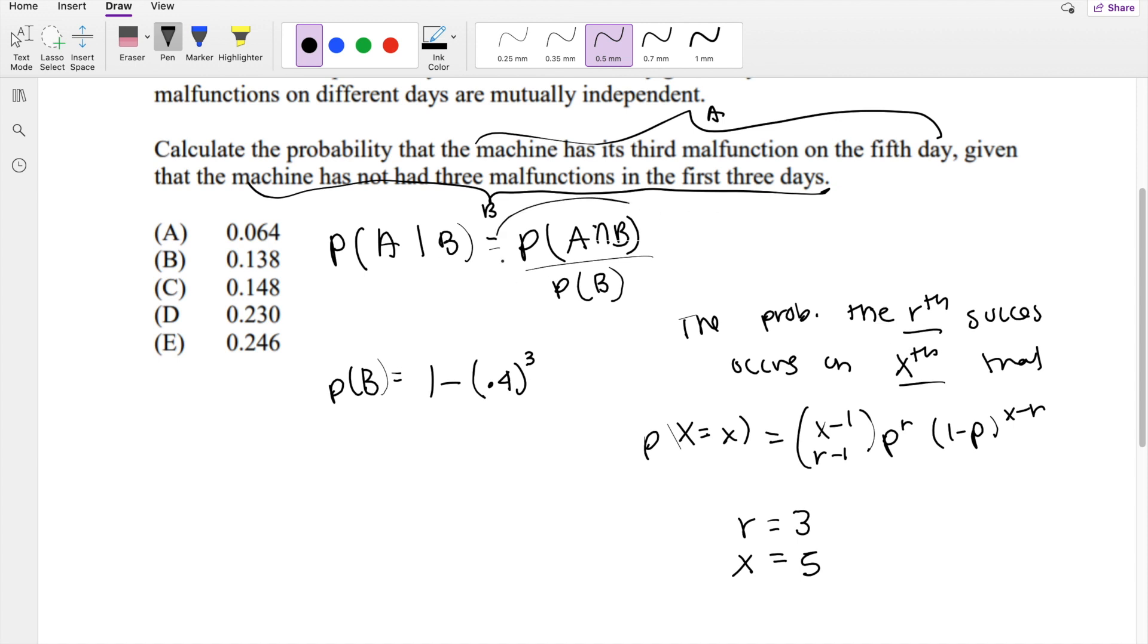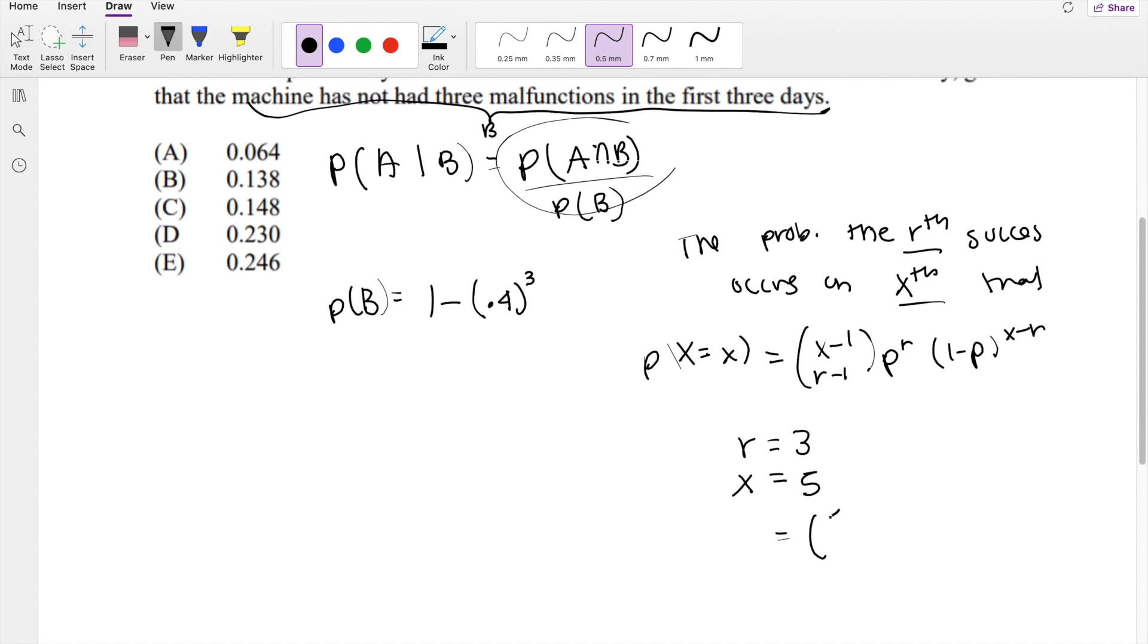Which is definitely just an intersection of A and B. So let's just plug it in and go on with our day. 5 minus 1, that's 4. r minus 1, that's 2.